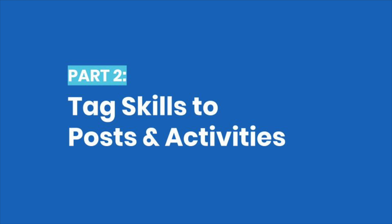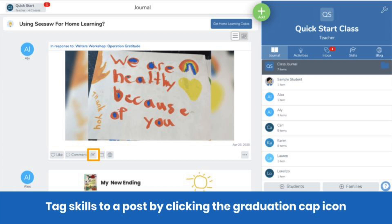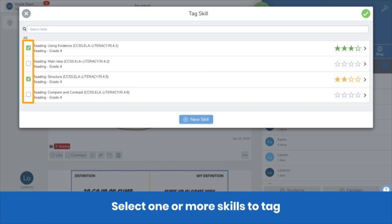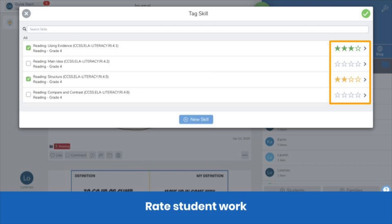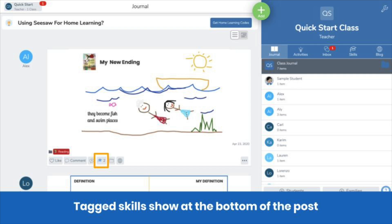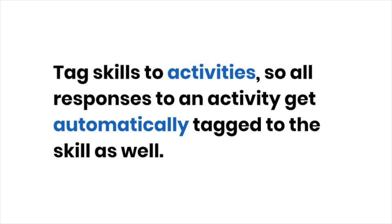Next, you'll need to tag skills to posts and activities. You can tag skills to student posts one by one by clicking on the skills icon on any post. Select one or more skills to tag and rate the student work. Tagged skills show at the bottom of the post. However, tagging skills to posts one by one is time consuming.